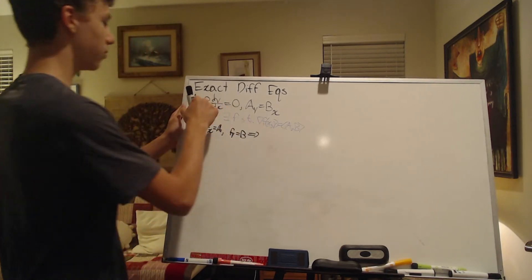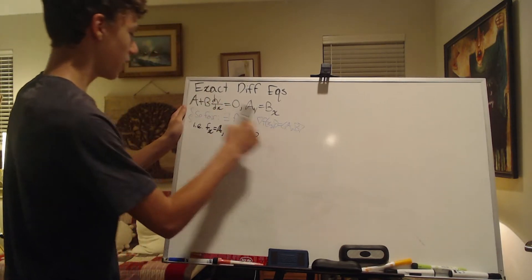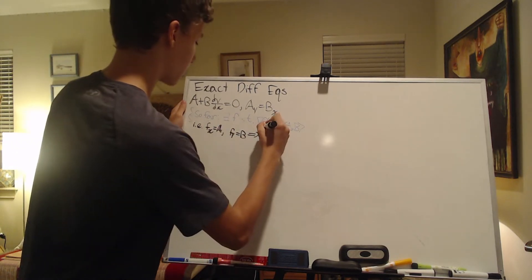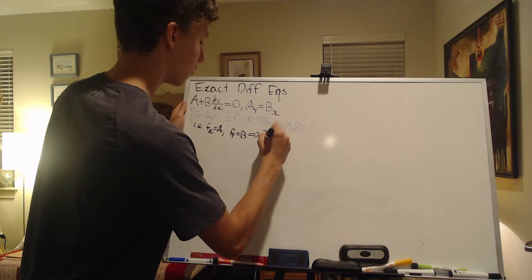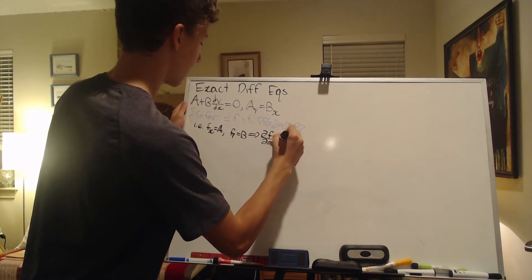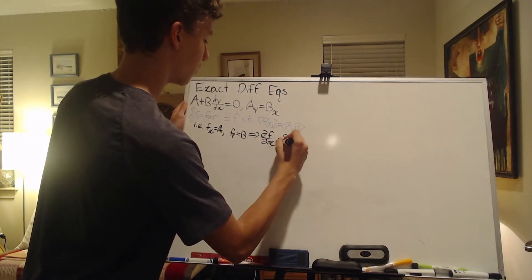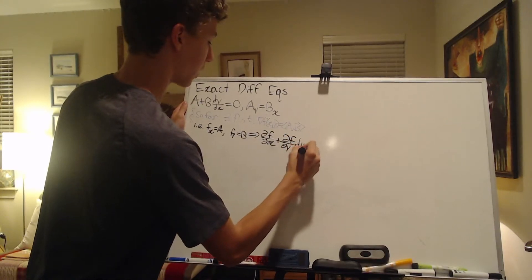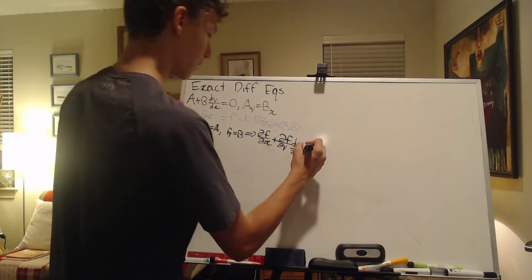So if we plug that into our exact differential equation, and in fact I'll use the more Leibniz-esque notation, so in other words, partial derivative of F with respect to X plus partial derivative of F with respect to Y, DY, DX. This is equal to 0.